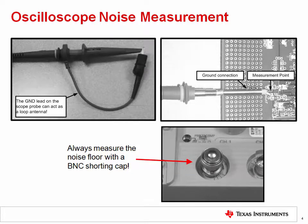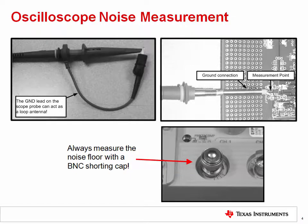Once you have properly configured your oscilloscope, measuring noise is done by adjusting the time scale to match the bandwidth of your circuit. Later, we will show an example measurement of the circuit that we did hand calculations and simulation for.